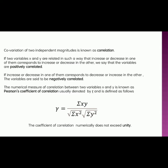What is correlation? Correlation is the covariance of two independent variables, and is known as correlation. If two variables x and y are related in such a way that an increase or decrease in one of them corresponds to an increase or decrease in another.